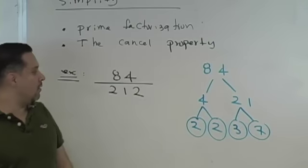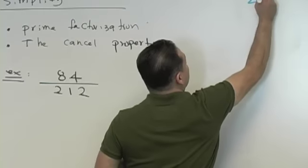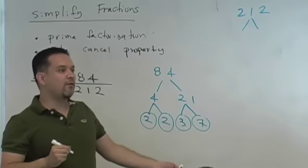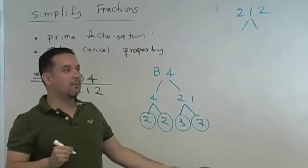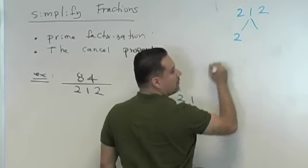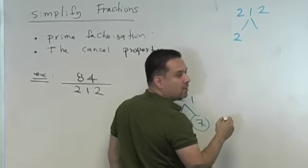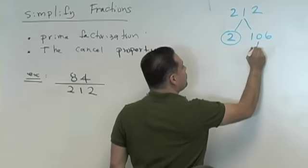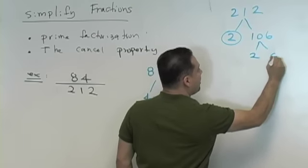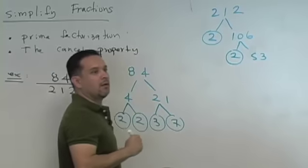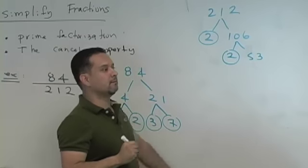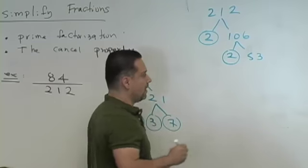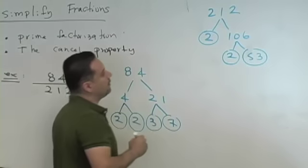We now have to factor 212. So we're going to take 212. What two numbers do you want to start with? 53 and 4? Is that 212? Or maybe you said 2 and 106? 2 and 106. 2 is prime. What about 106? We're going to do 2 and 53. 2 is prime. What about 53? Is 53 prime? Do you guys know? 53 is prime.